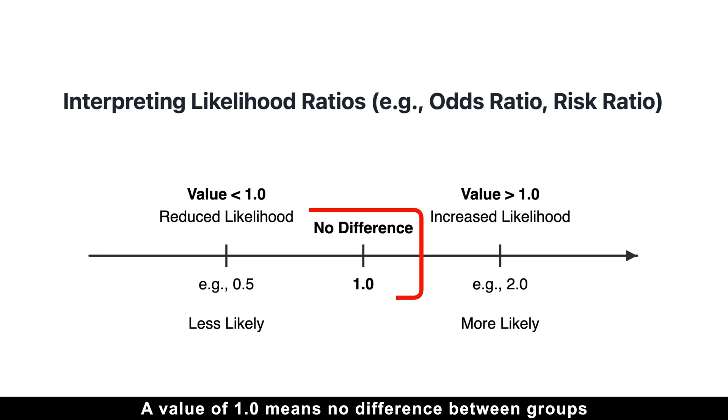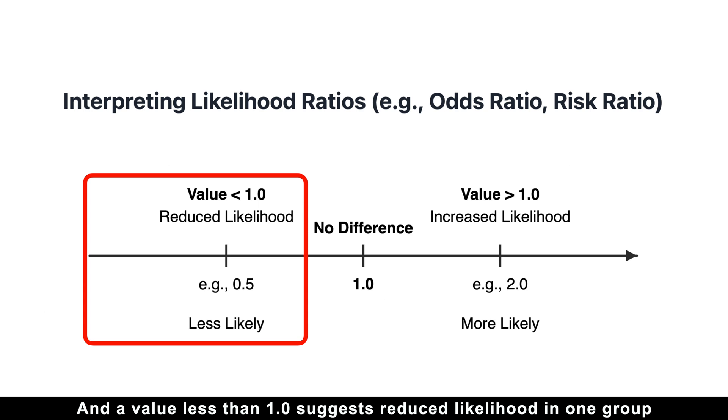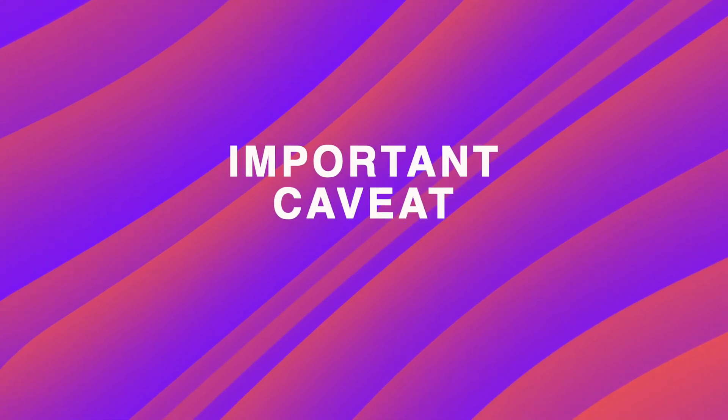Namely, a value of 1 means no difference between groups. A value greater than 1 indicates increased likelihood in one group. And a value less than 1 suggests reduced likelihood in one group. But here is an important caveat.